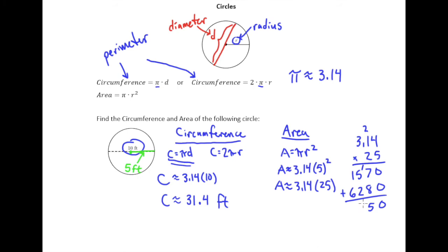So what we end up here is with 7, 8, 5, 0 and then there are two decimal places up here so I need to send the decimal point back two places down here so I go 1, 2. So my area is approximately 78.5 square feet.